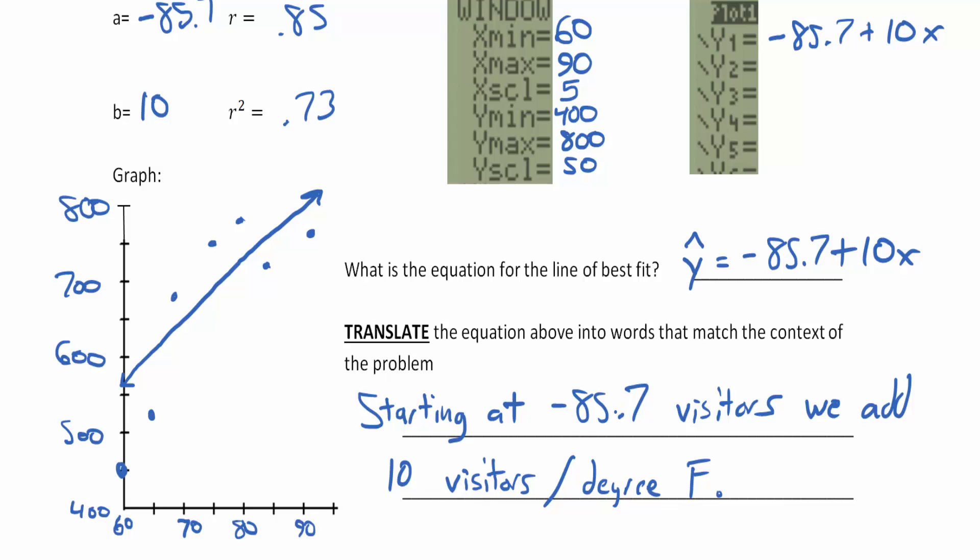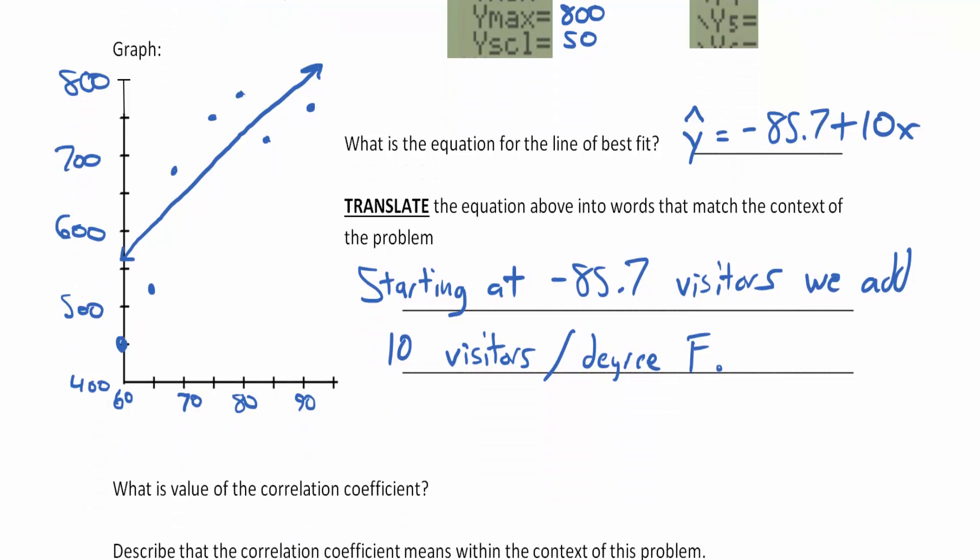You add about 10 visitors per degree. If we decided to go to 100 or 120 degrees, this pattern probably wouldn't continue. This would probably curve and be either logarithmic, exponential, or quadratic, but at least for this reasonable range of temperatures it seems to be linear.